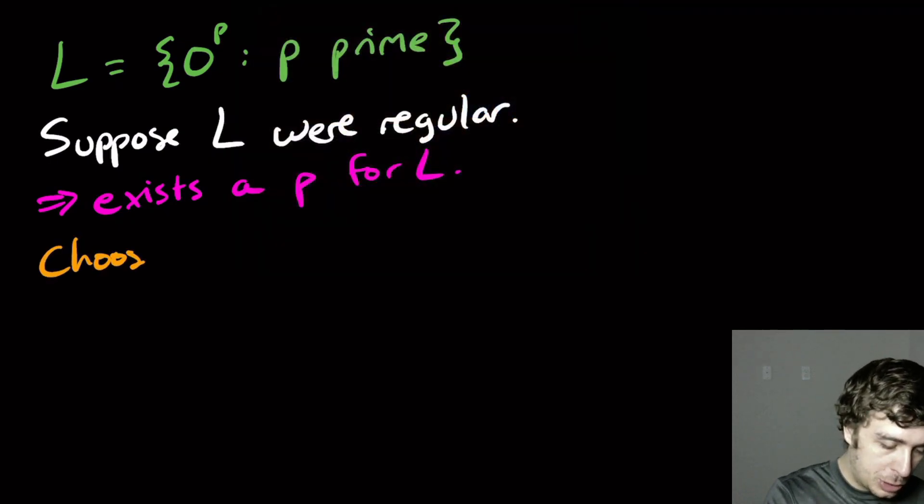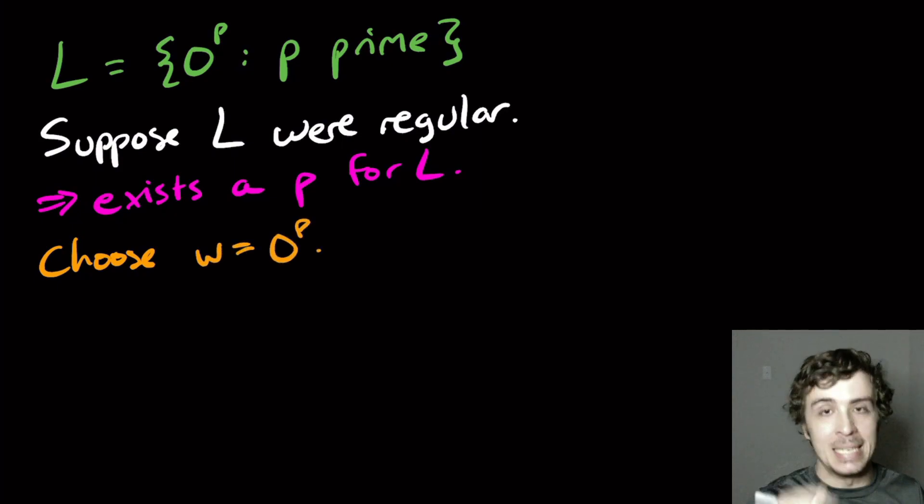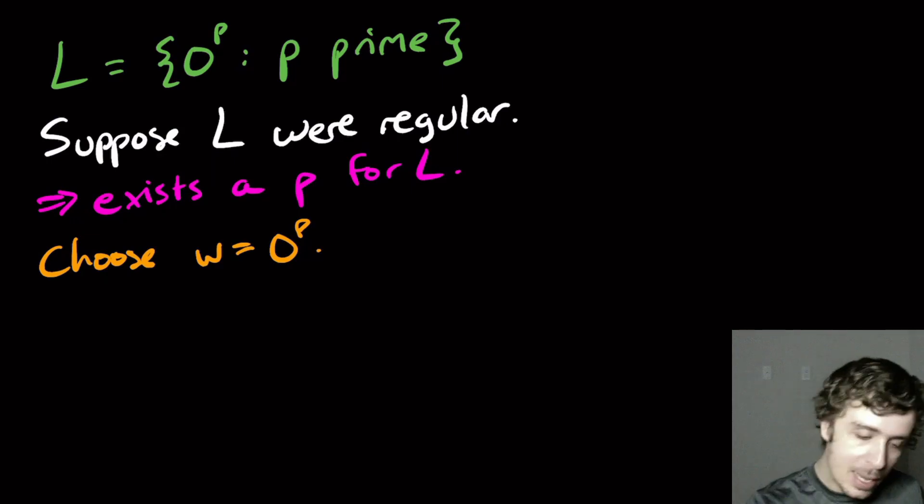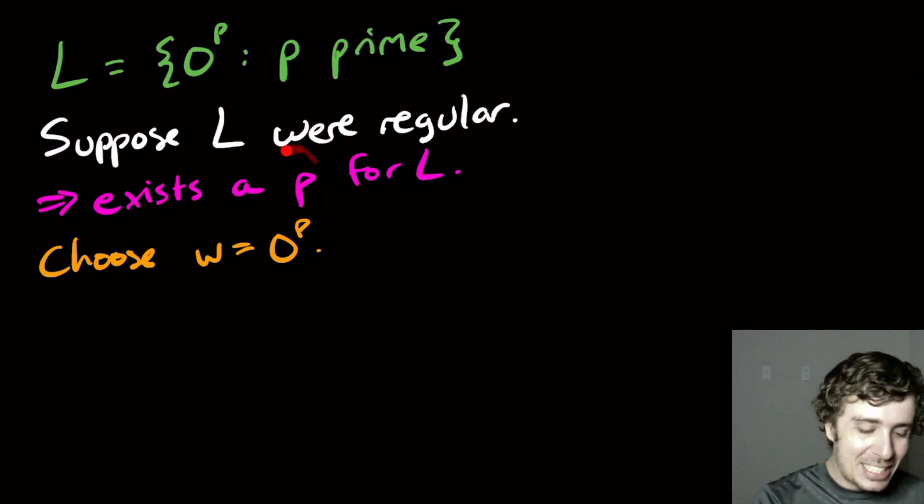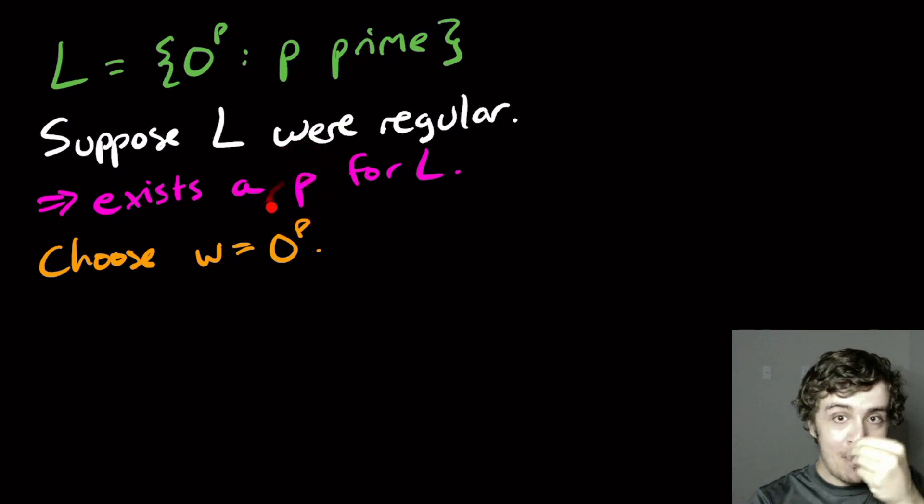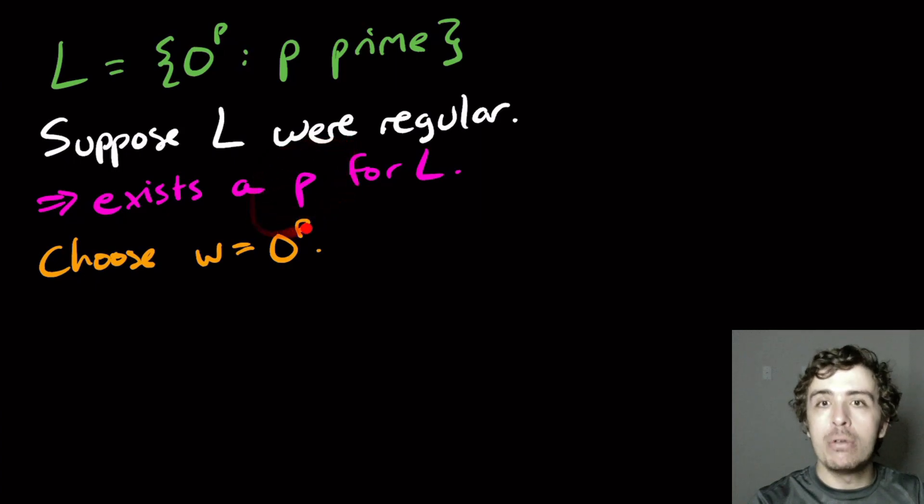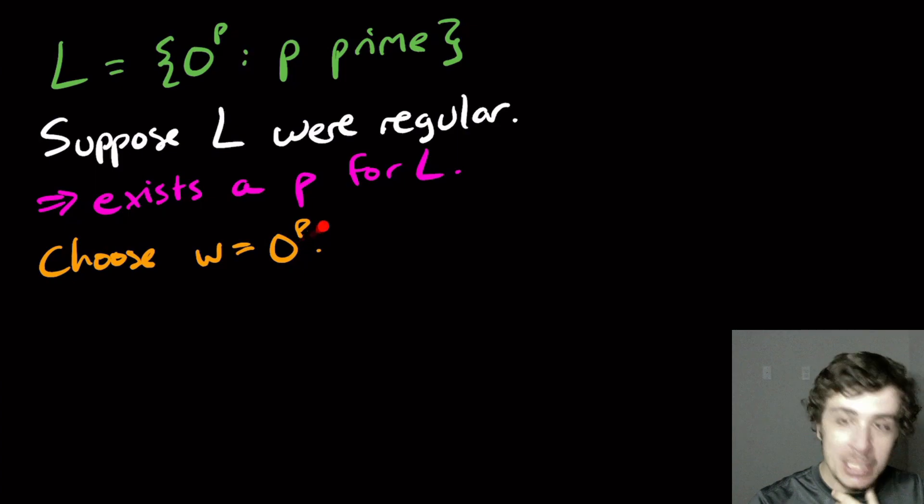So let's choose W equal to zero to the P. It's clearly of length at least P and the P's match up so therefore it's in the language. Except it might not. So this P can be any integer. We don't know necessarily whether it's prime or anything.